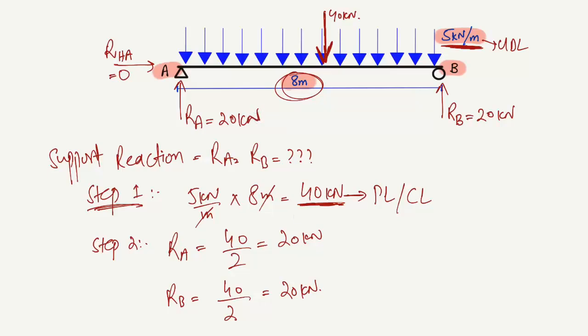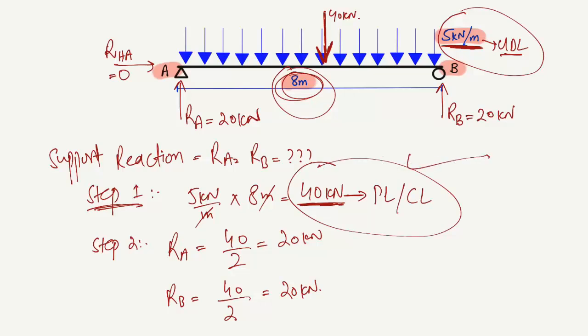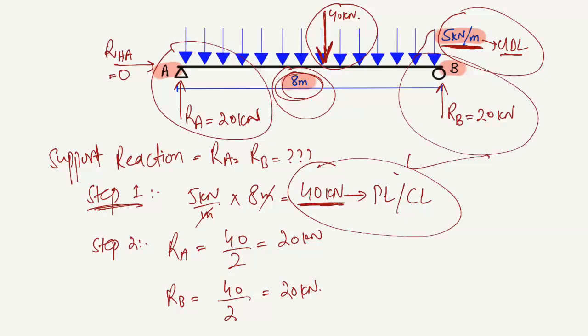So in just two steps you can find the support reactions of a simply supported beam with a uniformly distributed load. In step one, multiply the UDL by the overall length of the beam to get the equivalent concentrated load. In step two, divide that concentrated load by 2 — since it acts at the center — and each support takes half the load. I hope you guys understand.